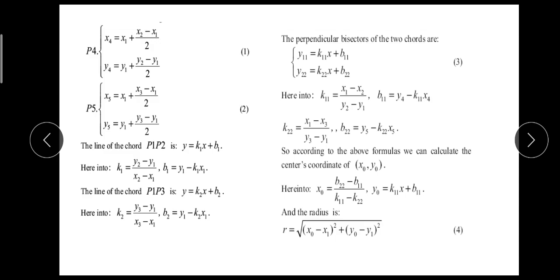So chord P1-P2 is a line with its formula: y = k1*x + b1. Here k1 is the slope and b1 is the intercept. So we have the formula of the slope: k1 = (y2 - y1) / (x2 - x1), and the formula for the intercept is b1 = y1 - k1*x1. Similarly we will find the slope and intercept of line P1-P3.